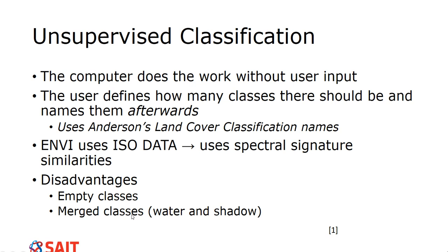Empty classes occur when, say, 15 classes are requested but you can't find five of them anywhere on screen — you just delete them from the legend. Merged classes are another issue: water and shadow, for example, can end up grouped together because they're spectrally similar. You may also get two classes of the exact same thing that need to be merged, requiring significant post-classification work.